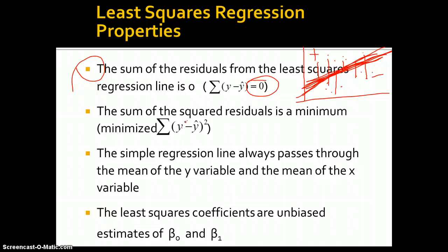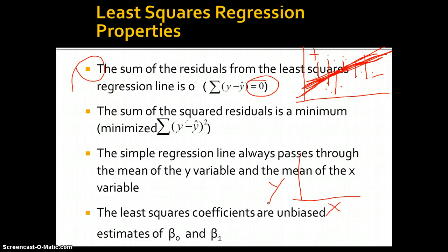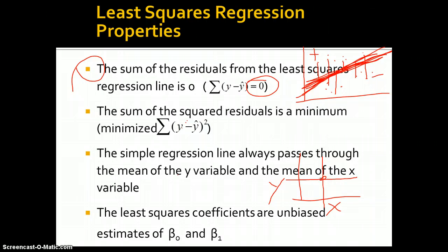This simple regression line always passes through the mean of the y variable and the mean of the x variable. In other words, if we're plotting this, the mean of y is somewhere here and the mean of x is somewhere here, and at some point the regression line is going to pass through both.